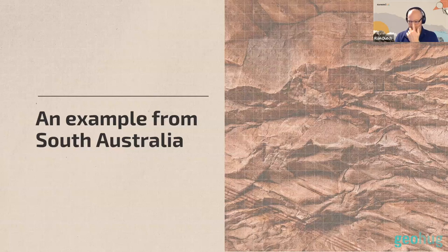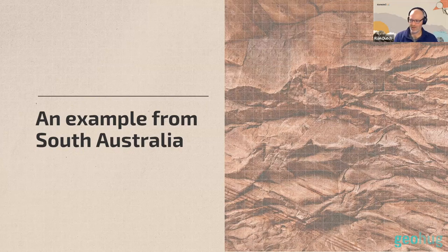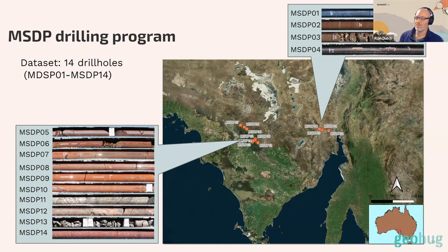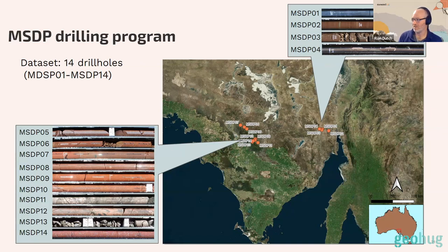Now we have images as numbers — let's see what we can do with them. I'll present a couple of examples from South Australia. These are toy examples, not something to put into production tomorrow, but they give a flavor of what you can do by adding the visual, textural information from the rock into numerical data. We'll use the MSDP drilling program — a pre-competitive drilling program done by the South Australian government in the early 2010s.